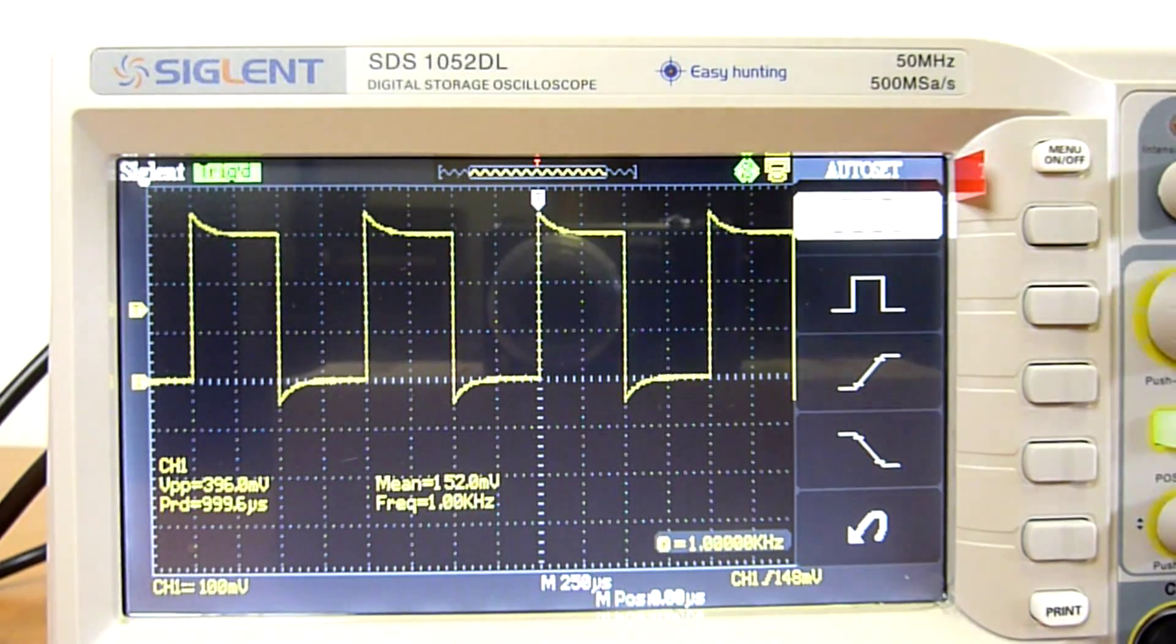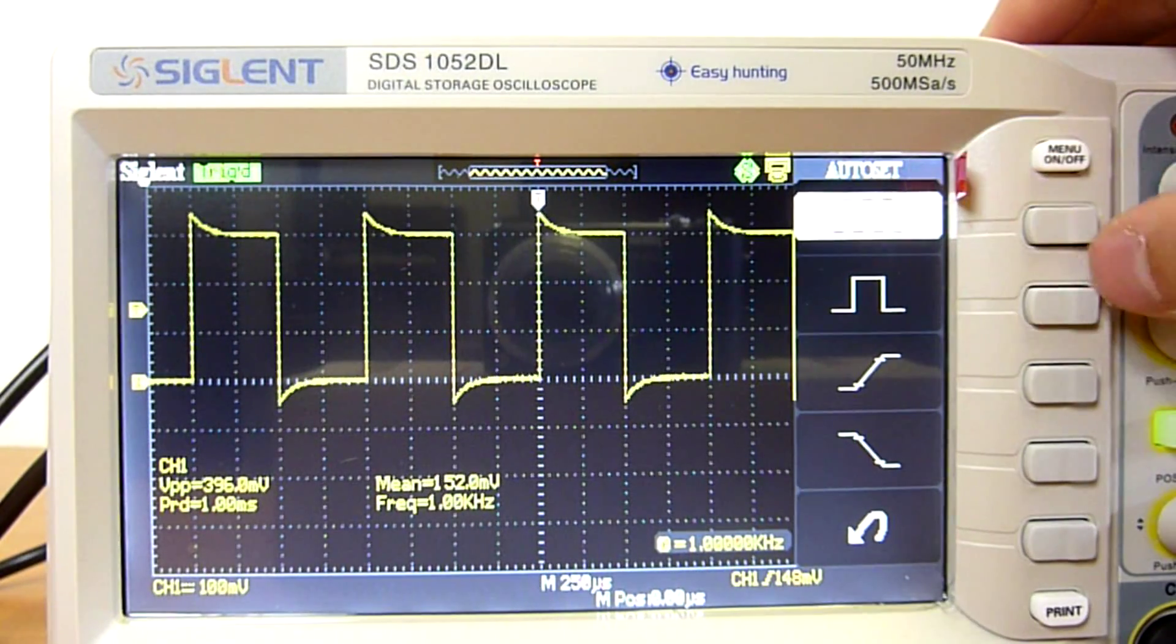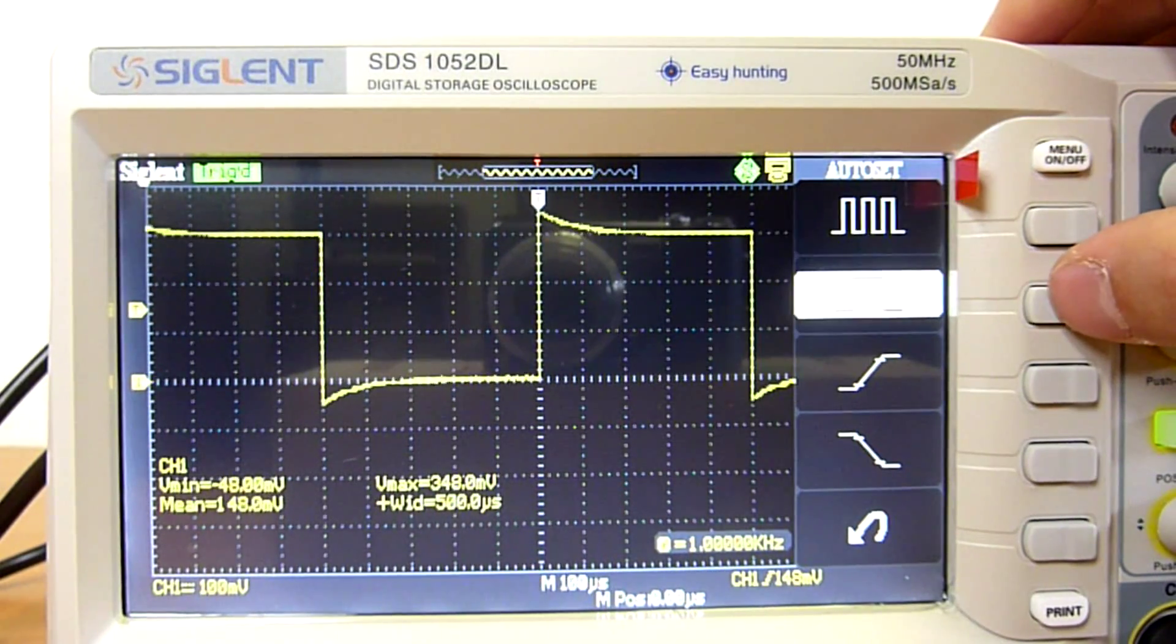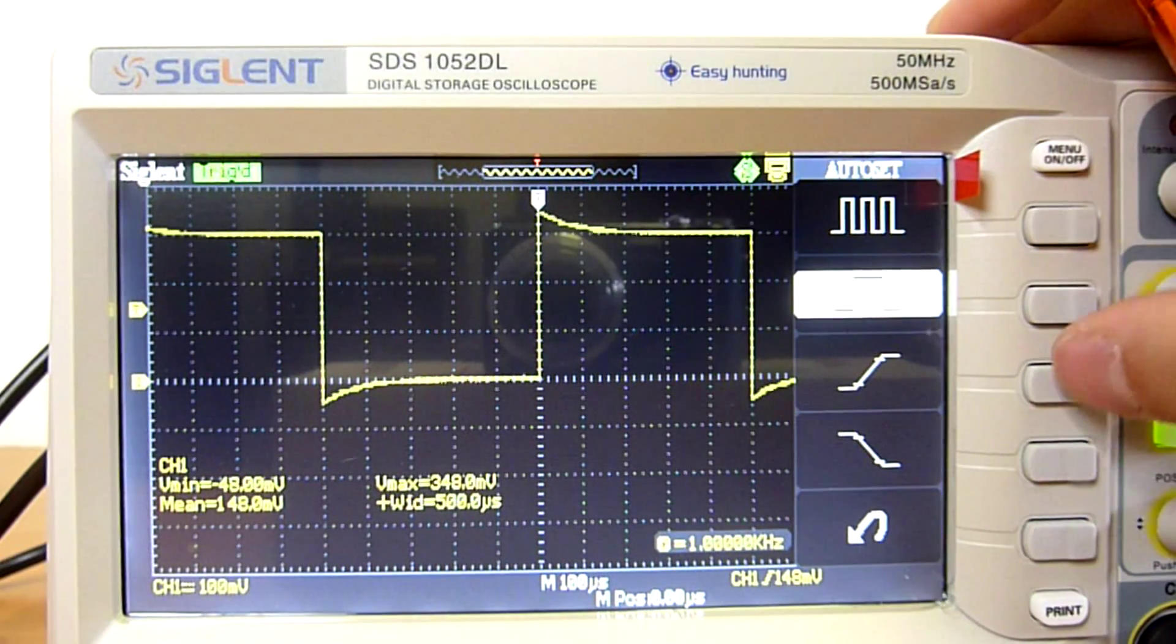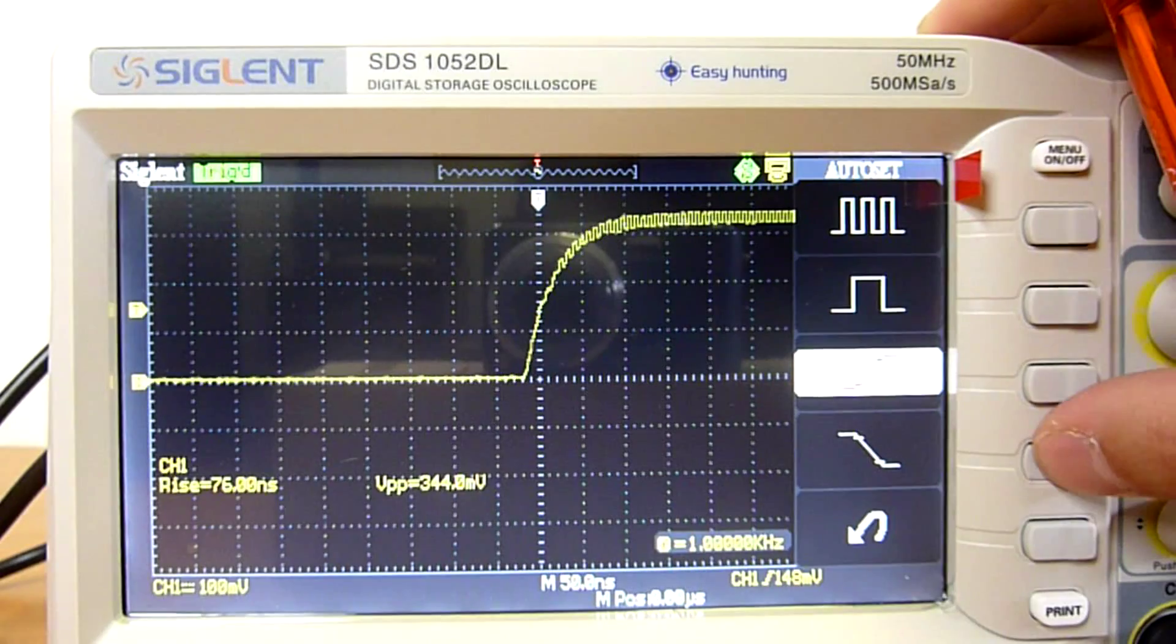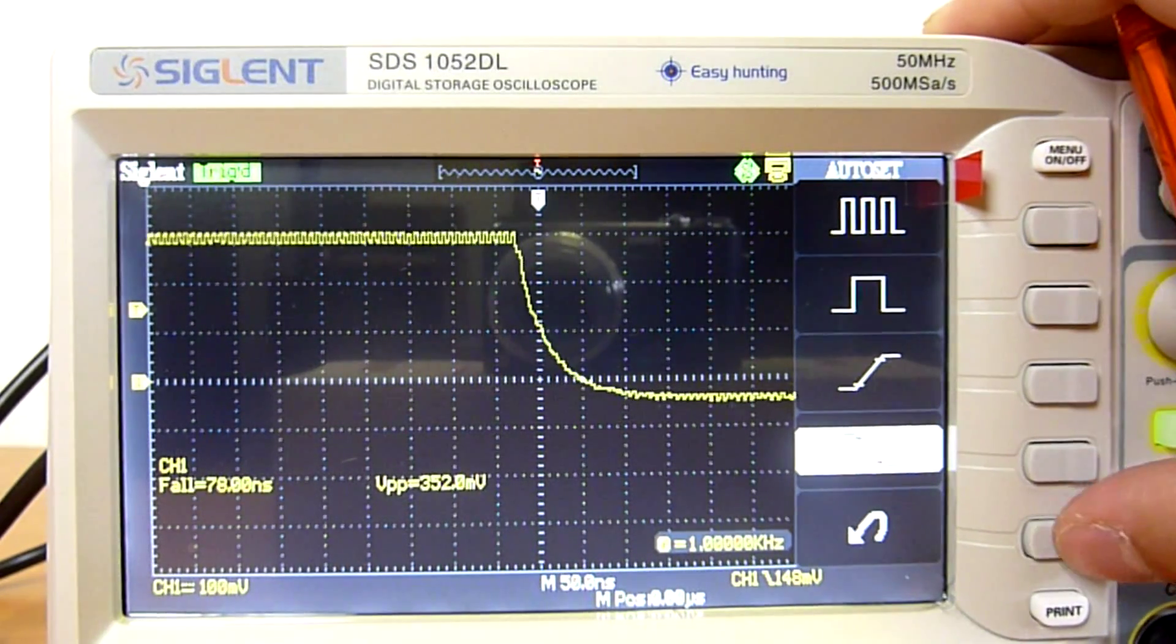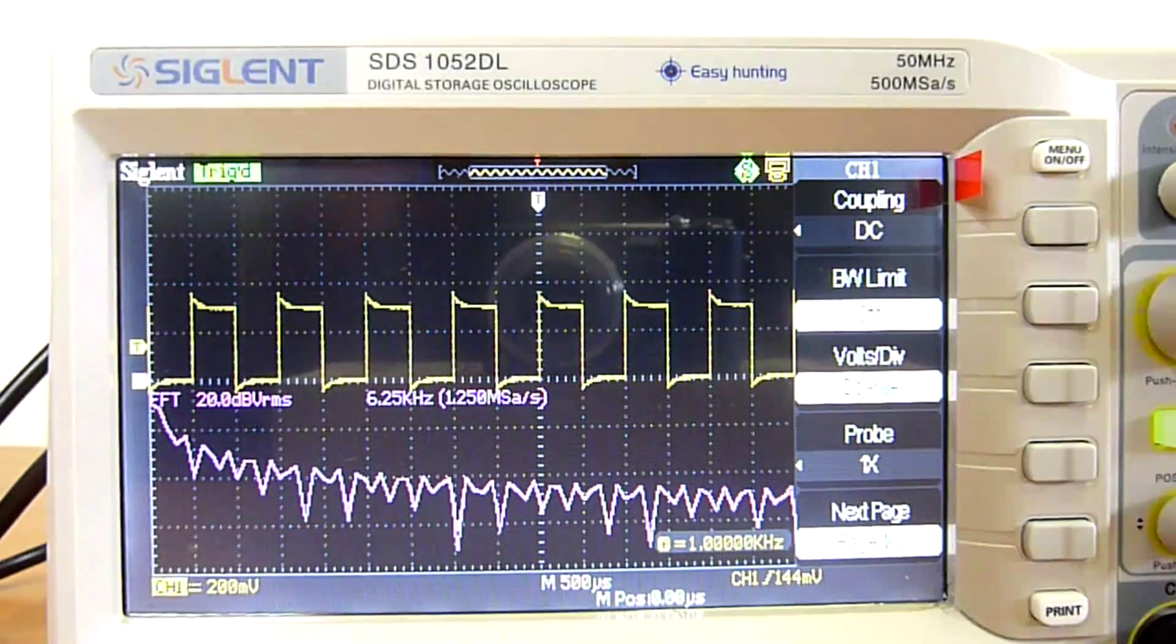When I press the auto and I have a rectangle signal coming, I can see the full signal. Or one period. Or I can see the rising edge. Or the falling edge. Just by pressing these buttons. It's very nice.